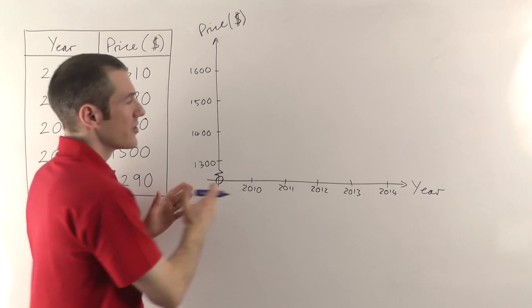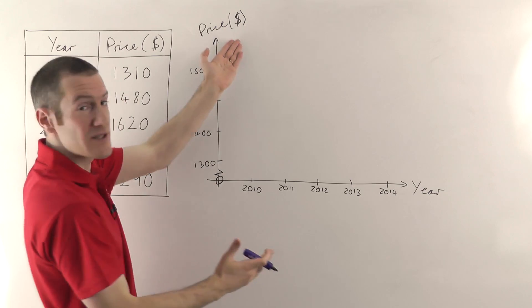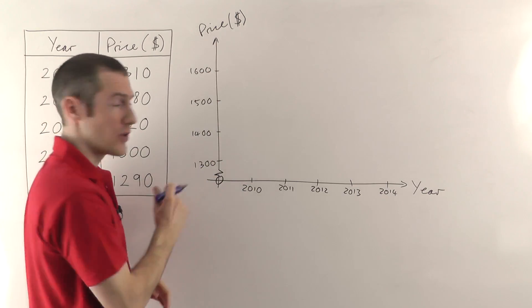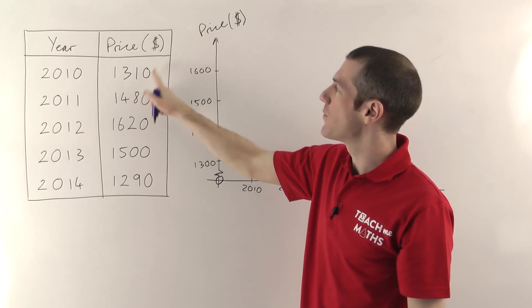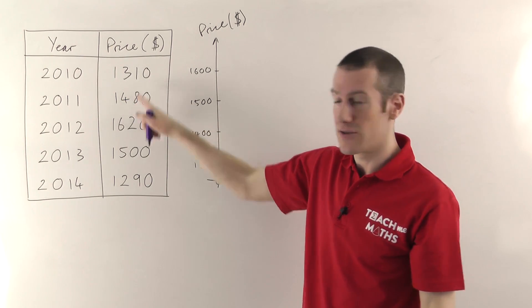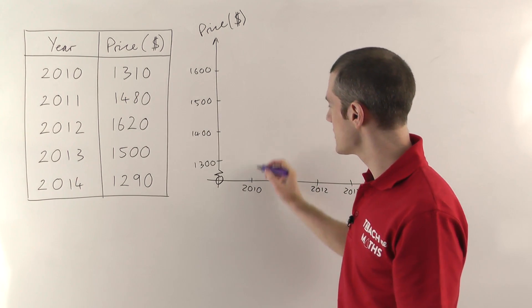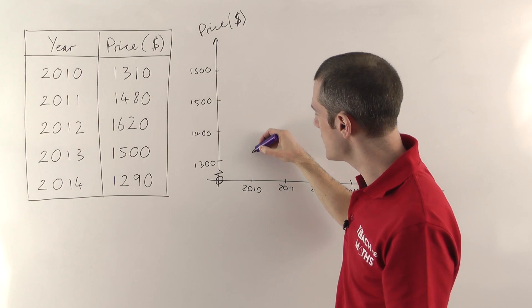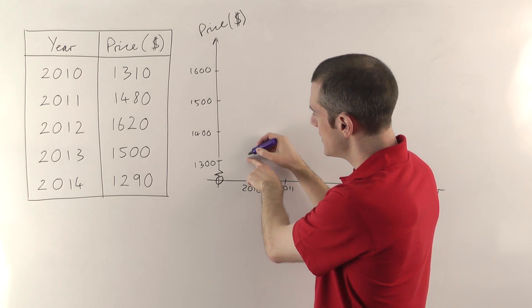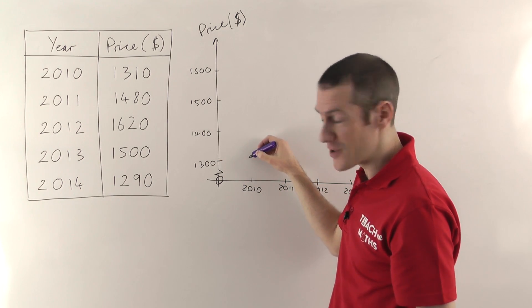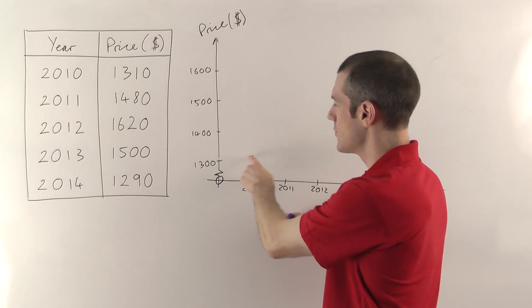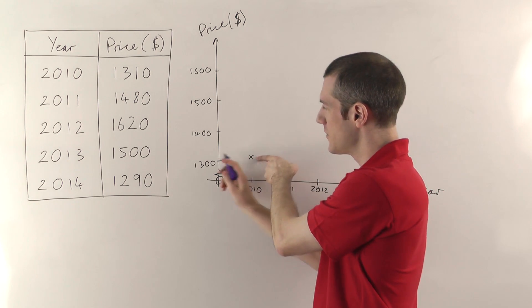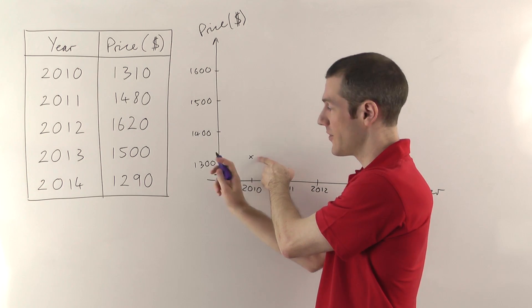Once you've got your two axes with the numbers, you've labelled them, you've specified the units, then you can plot the points. So your first one, 2010, needs to have a price of $1,310. So 2010, from here you go straight up, find out where the 1310 is. Now again, you can be accurate here because you'll be using graph paper. And you basically put a little cross where those two things meet, where 2010 meets 1,310 on that axis.